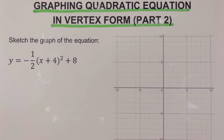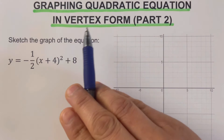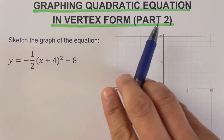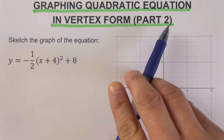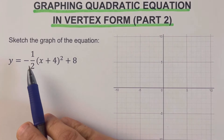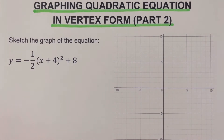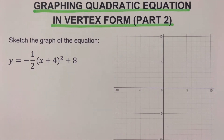Hello everyone! This video focuses on graphing quadratic equations in vertex form, and this is the second part. In this part, the absolute value of a is greater than zero but less than one. Please feel free to check out the description box below for the link to the other series of topics related to graphing quadratic equations in vertex form. Before we jump into the example, let's have a review on the basics.